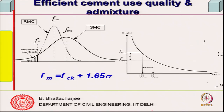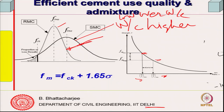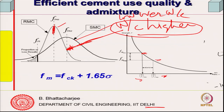Higher water-cement ratio gives lower strength; lower water-cement ratio gives higher strength. For concrete where strength is less, you can use a higher water-cement ratio — in other words, less cement is needed. For concrete where higher strength is required, you need a lower water-cement ratio, so more cement must be consumed for a given quantity of paste.